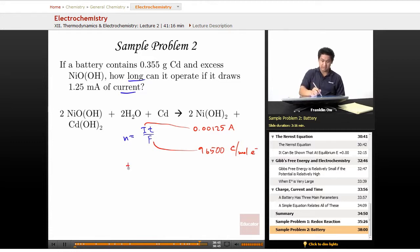The question is asking us to solve for time, so t is going to equal n times f over i. All right, so all we need is n. Remember that n is the mole of electrons that is determined stoichiometrically, so let's go ahead and get it.